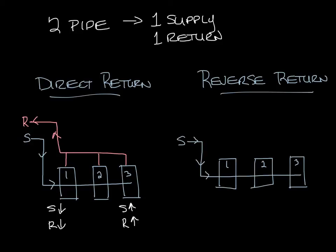So the first unit's return goes the longest, then the second, then the third. So now you can see that the first unit has the shortest supply path but the longest return path. And the last unit has the longest supply path but the shortest return path.